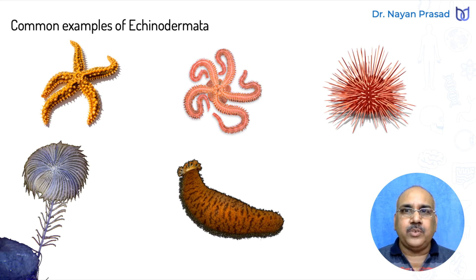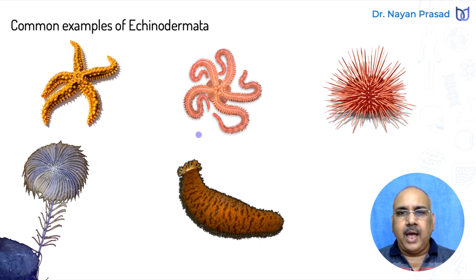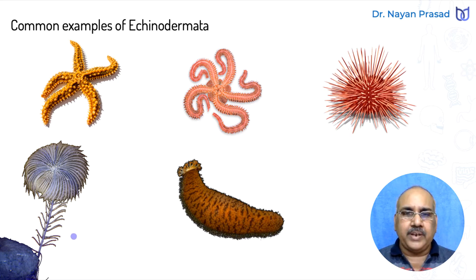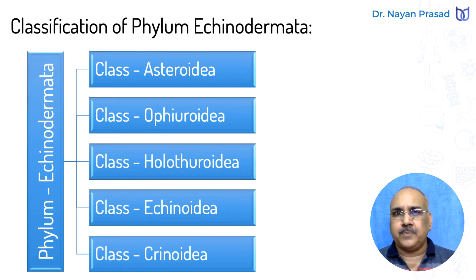Phylum Echinodermata includes exclusively marine animals. This is the last invertebrate phylum, which includes about 7500 living species. The most common examples are the starfish, brittle star, sea urchin, sea lily, and sea cucumber. These all share some features in common but differ in certain features — some with a star-shaped body, some with a globe-like body, some sedentary, and some with an elongated body. On the basis of their locomotory structures and other features, Phylum Echinodermata has been divided into five different classes.